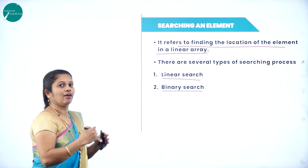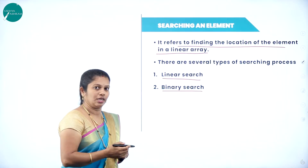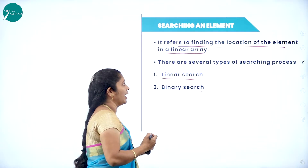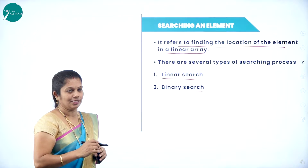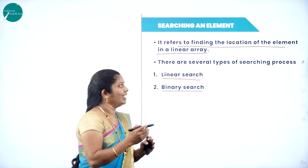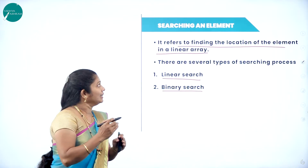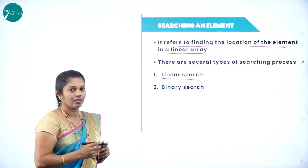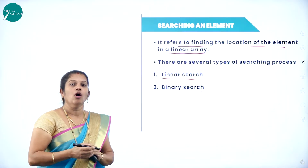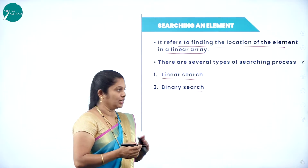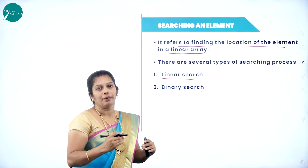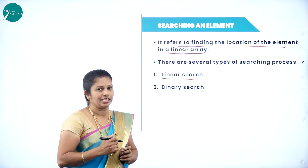You may also have several types of searching techniques, like selection search. But in your syllabus, you have only linear search as well as binary search. Searching is a process of finding the location of an element in a linear array. Linear search means one after another, all the elements are searched. Whereas in binary search, we divide the entire array into two parts and then the searching process takes place.